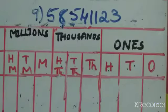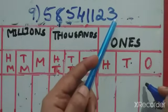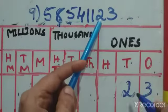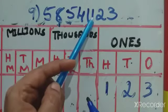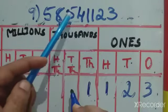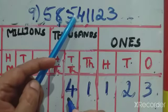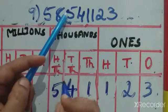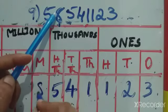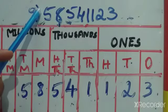Now 9th question. The number is 585,411,123. We have to write that in the international place value chart. Filling from the right: 3 in ones, 2 in tens, 1 in hundreds, 1 in thousands, 4 in ten-thousands, 5 in hundred-thousands, 8 in millions, 5 in ten-millions.